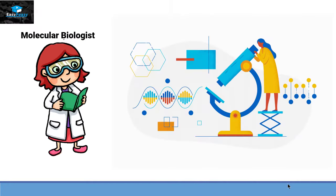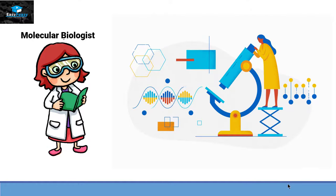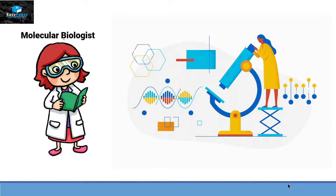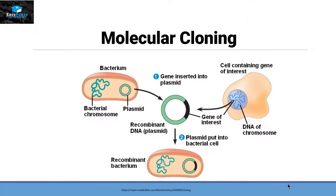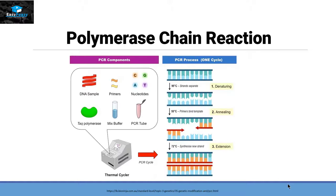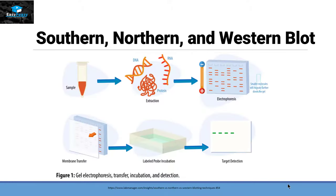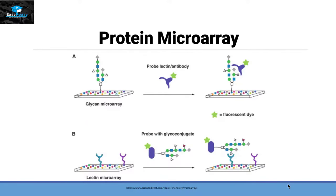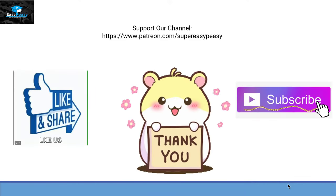Molecular biologists not only see things differently, but they also use different types of techniques in order to make this world better. These techniques include molecular cloning, polymerase chain reaction, Southern, Northern and Western blot, electrophoresis, and protein microarray, etc. All these techniques will be explained in separate videos. Till then, take care and bye for now.